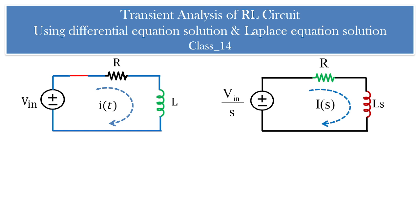Welcome to another session of circuits and networks. In today's class, under transient analysis of RL circuits, we will see the solution of transient current — the output current flowing through an RL circuit when the input is DC. This is class 14. In our previous 13 classes, we covered the differential method and the Laplace transform method. Today we will compare both methods and solve an example using MATLAB.